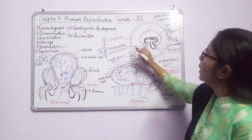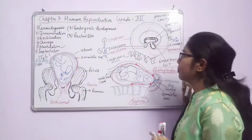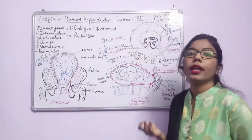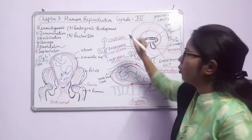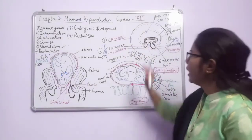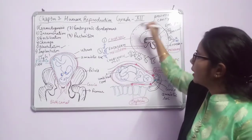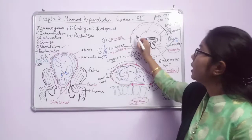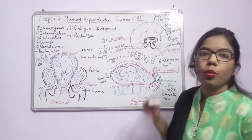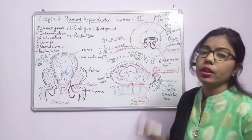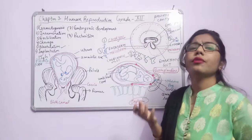The ectoderm and mesoderm give rise to different tissues. Among the extra-embryonic membranes, we have chorion, allantois, and yolk sac. Chorion is the outermost layer of the embryo, composed of trophoblast cells. Inner to the chorion, mesoderm is present. So chorion is the outermost layer, composed of trophoblast cells with an inner mesoderm layer, and its function is to protect the whole embryo.